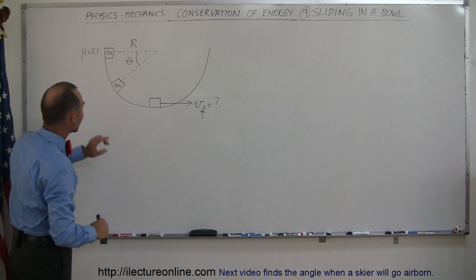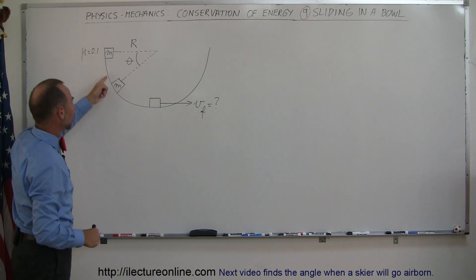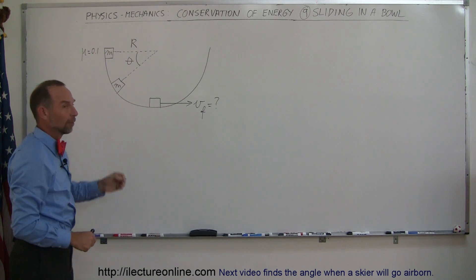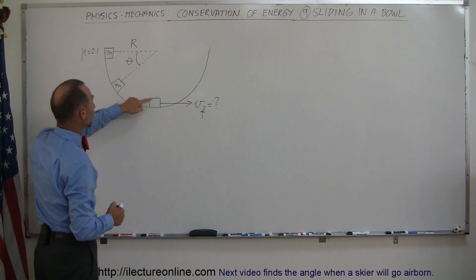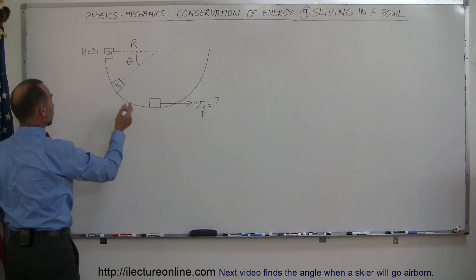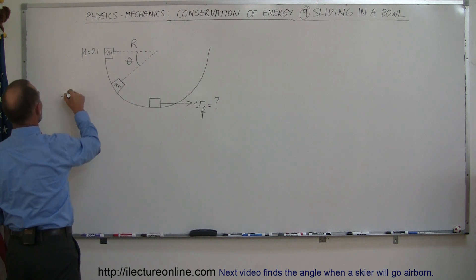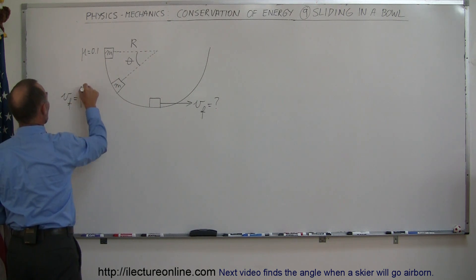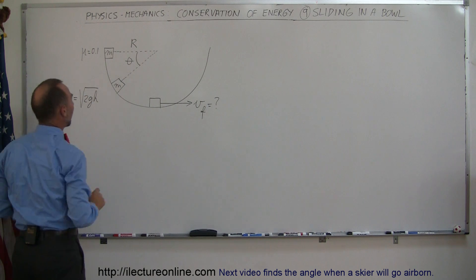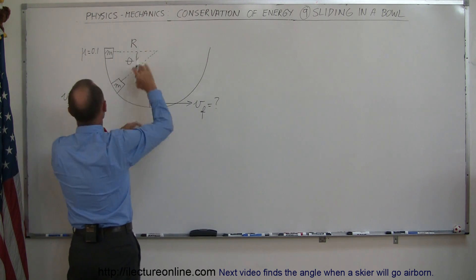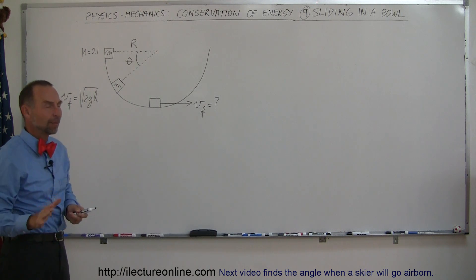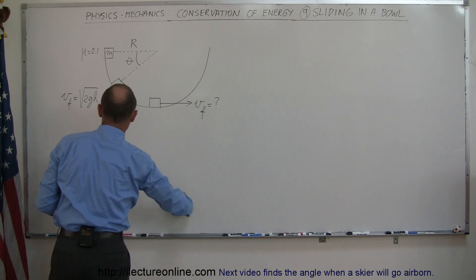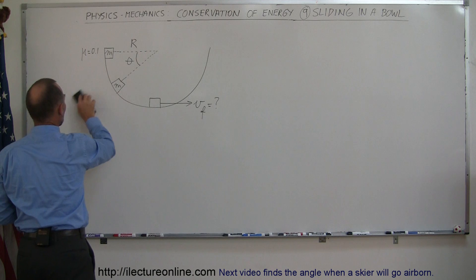What makes it a little bit more difficult is that there's friction along the side. If there was no friction, we could say the velocity at the bottom of the hill would be v_final = √(2gh), and since h equals the radius of the bowl, it would be √(2gR). That would be simple, but because there's friction, that will not be the answer.